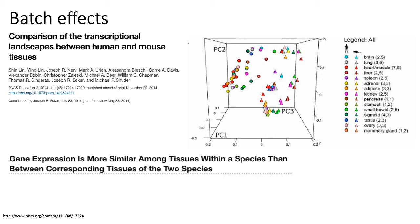This PC plot from the paper visualizes the different RNA-seq samples collected across tissues for human and mouse. The circles represent tissues from human and the triangles represent tissues from mouse. You can broadly see that the circles cluster together and the triangles cluster together. They're showing the first three principal components of the expression data, and the main point is that human tissue samples cluster together while mouse tissues cluster together.